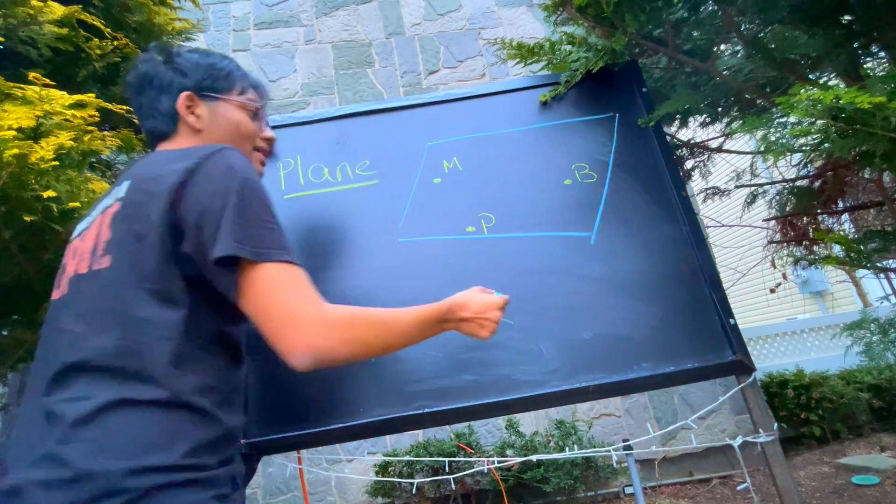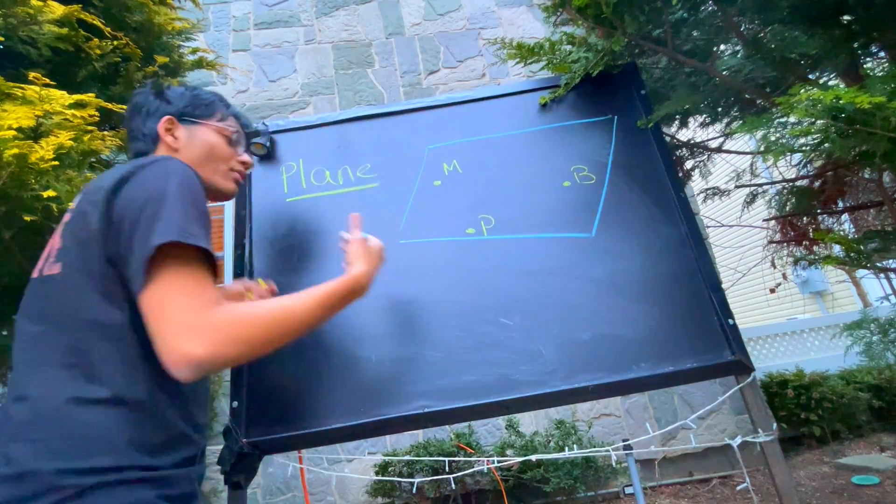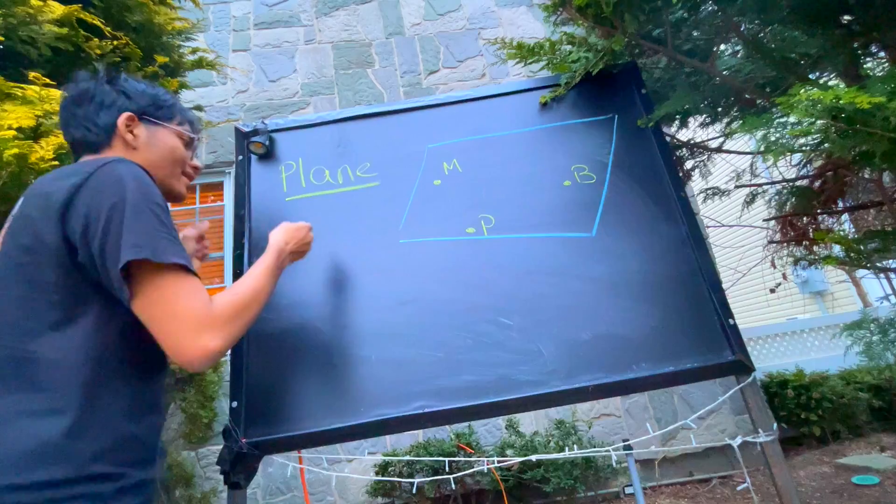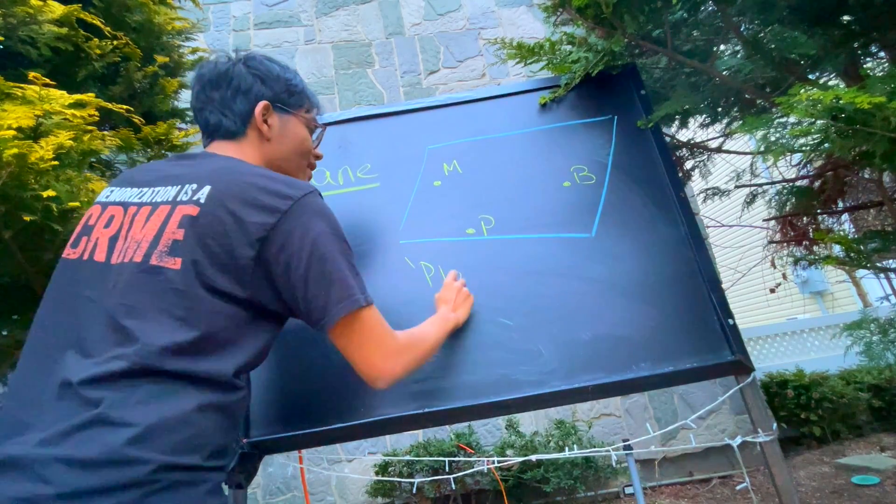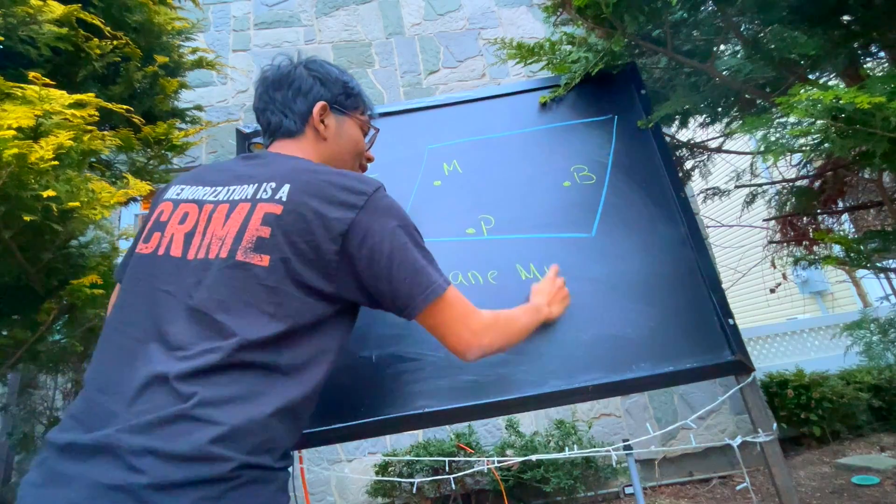Now that's not it, right? If I have these three points, how can I name my plane? Well, I can name it in a bunch of different ways. I can call this plane MPB.